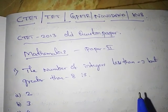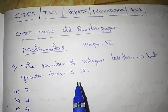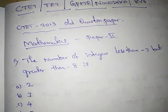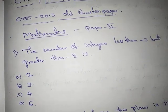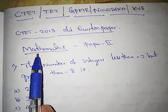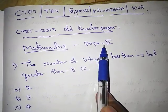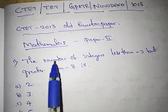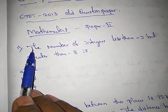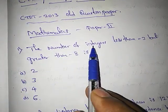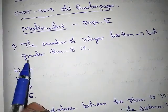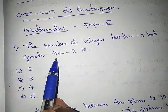I am going to explain the question paper. The problems are helpful for Paper 2 — I have chosen the Mathematics Paper 2. Let us start the video. The first question: the number of integers less than -3 but greater than -8 is?